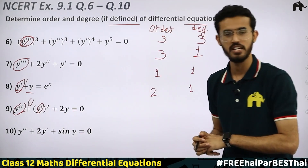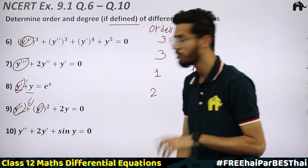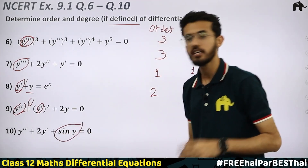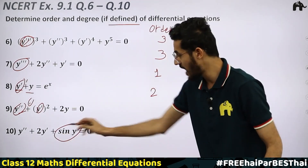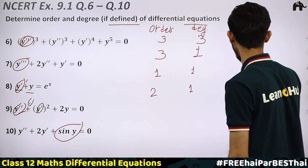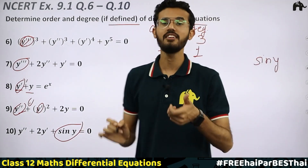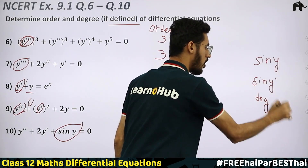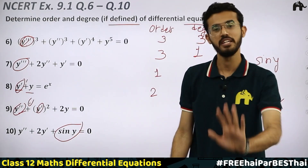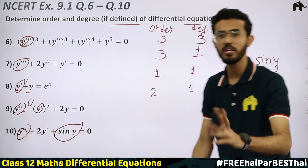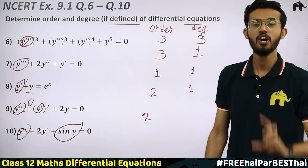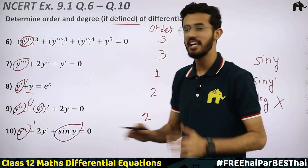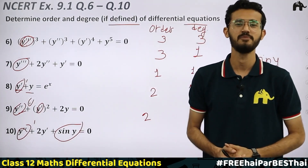Question 10: y″ + 2y′ + sin(y) = 0. Notice that sin(y) appears here — y is not a derivative, so the degree is defined. If it were sin(y′), the degree would be not defined. Since it is sin(y), the order is 2 (highest derivative is y″) and the degree is 1.